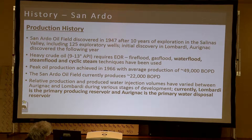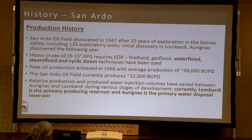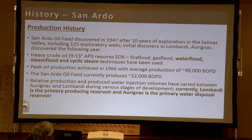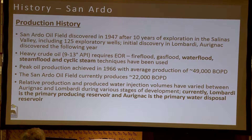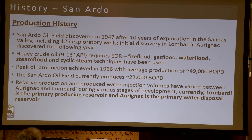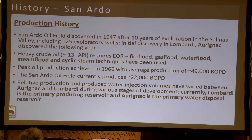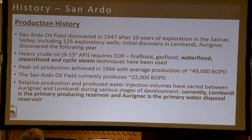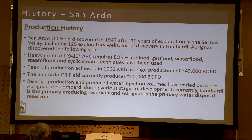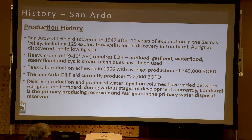Traditionally, techniques like fire flood and gas flood were used. Currently, techniques like water flood, steam flood, and cyclic steam are used to move that oil. Peak oil production occurred in 1966 with about 49,000 barrels of oil per day.